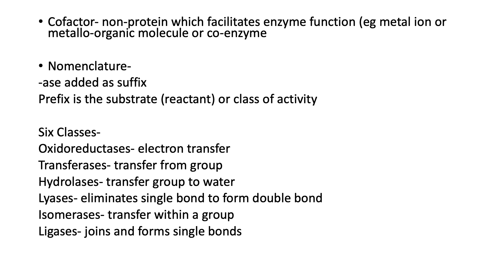The six classes are: oxidoreductases, which involve a particular electron transfer — you'll see this in oxidative phosphorylation; transferases, which transfer functional groups; hydrolases, which transfer groups to water; and lyases, which eliminate a single bond to form a double bond. This is often prominent in catabolic pathways where you're breaking down substances to form energy, with water and carbon dioxide as byproducts.